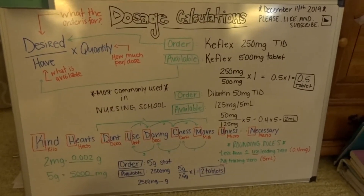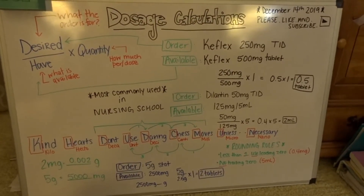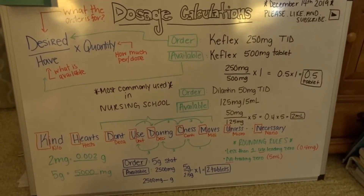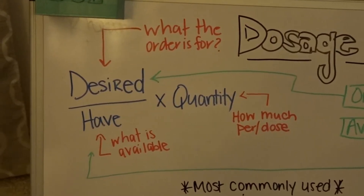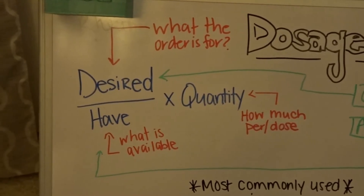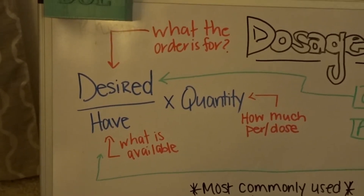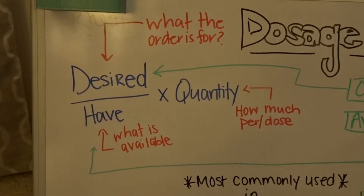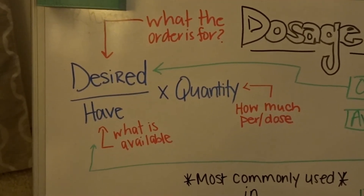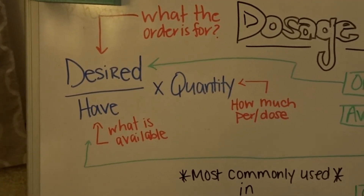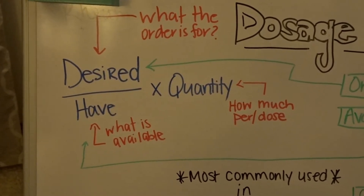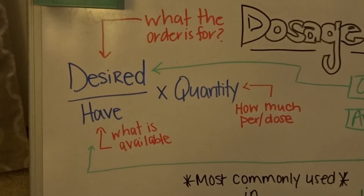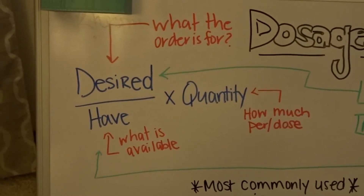Today we are going to be talking about dosage calculations. The most common formula is desired over have times quantity. The top part is the desired — that is what the order is for. That is going to be divided by what you have, or what is available. And that's going to be multiplied by the quantity, how much per dose is in what you are giving.